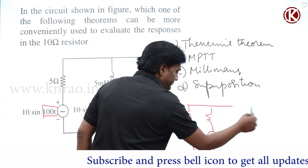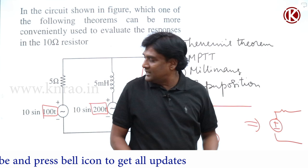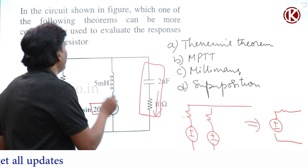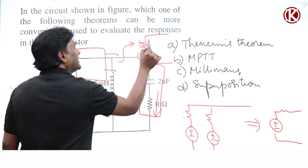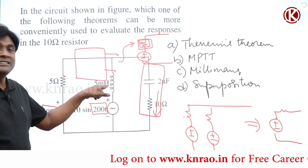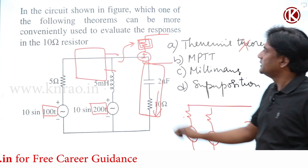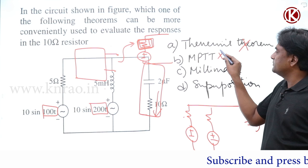Milliman's theorem cannot be applied because the two sources have different frequencies — the network behaves differently for each frequency, so we cannot combine them into one equivalent. For Thevenin's theorem, the combined network would give one impedance, but since behavior differs for each frequency, Thevenin's also won't work. Maximum power transfer also won't work. In all these theorems, only one impedance appears, but we cannot calculate a single impedance when different frequency components are present.